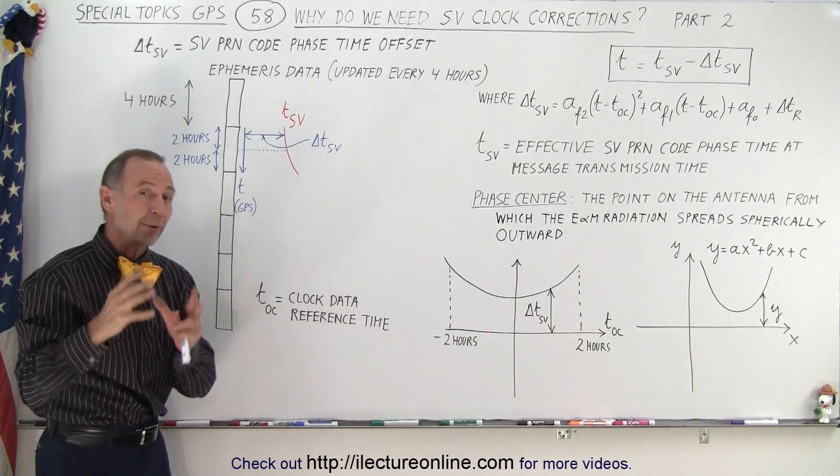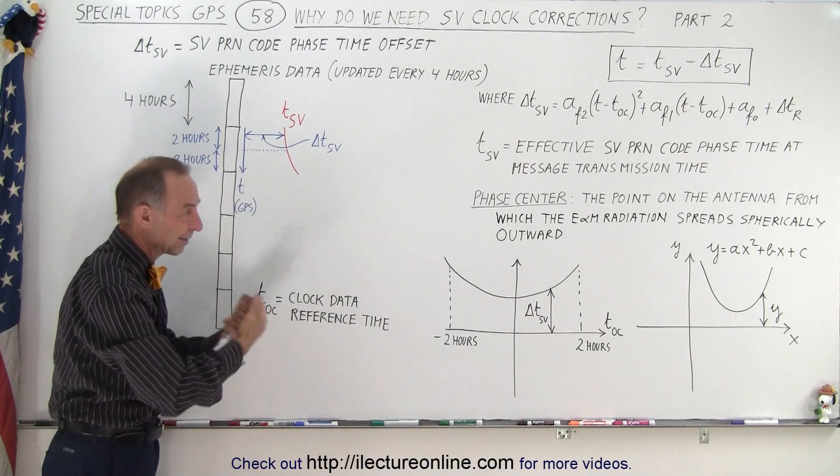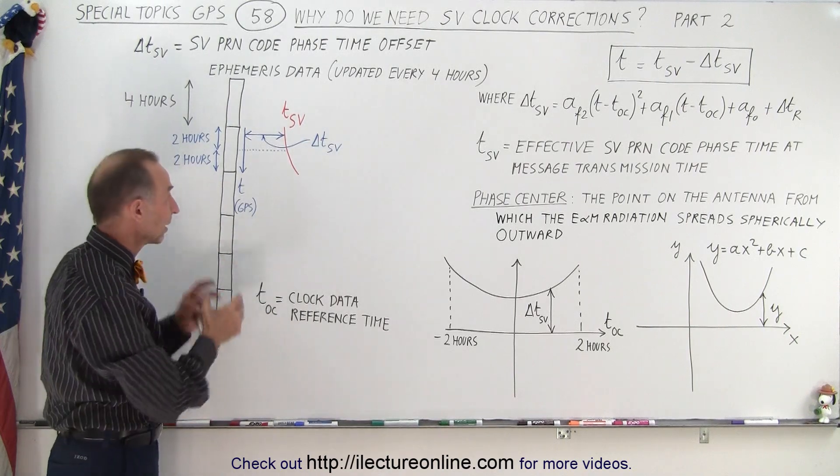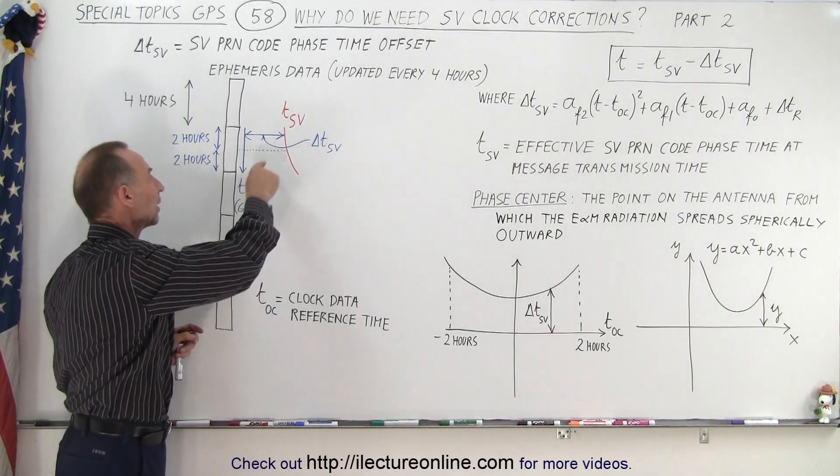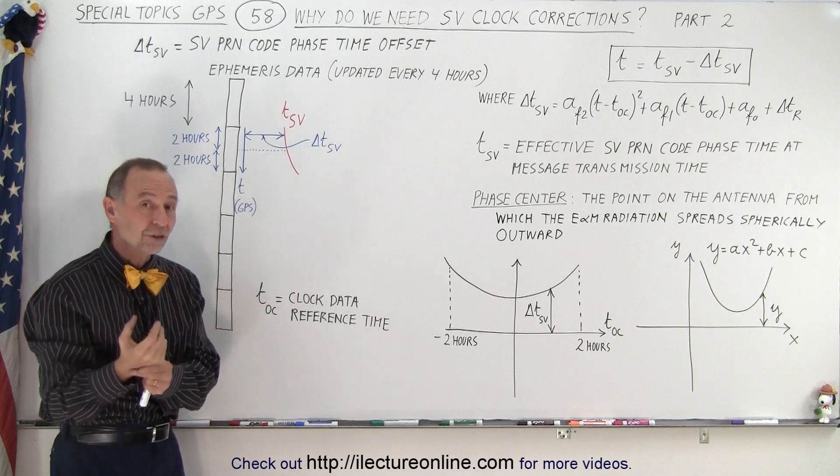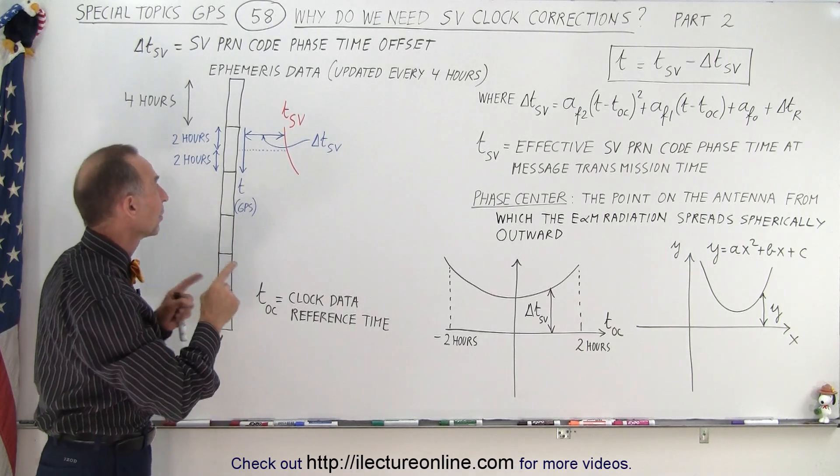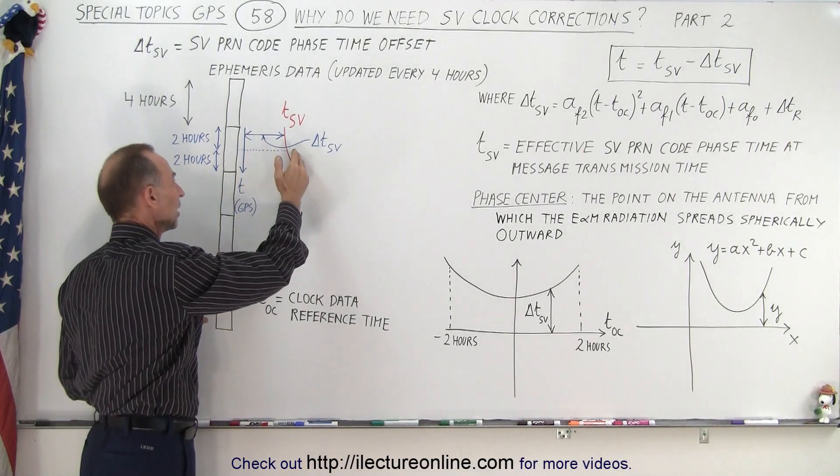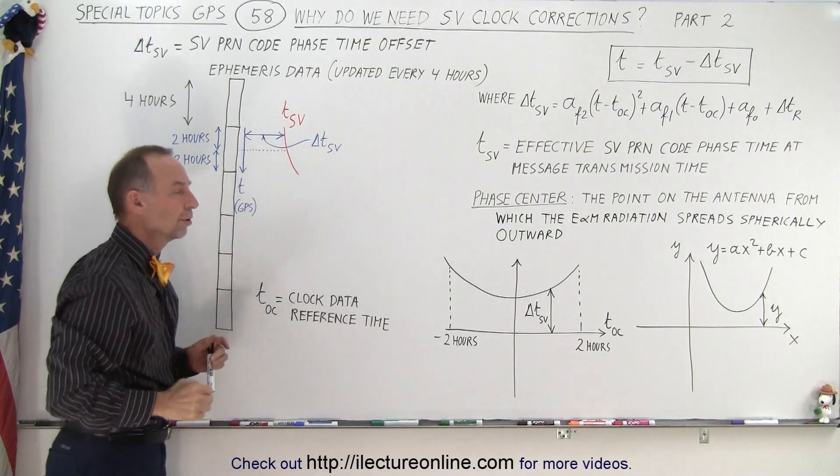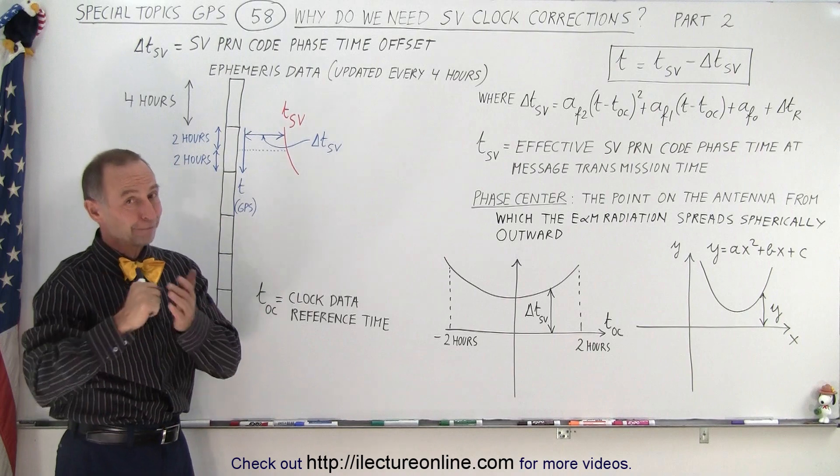Because every satellite sends its own orbital parameters that are very, very accurate, and from that we can get very accurate GPS position with the receivers on earth by again syncing up the SV time to the actual GPS time. And that is how it's done.